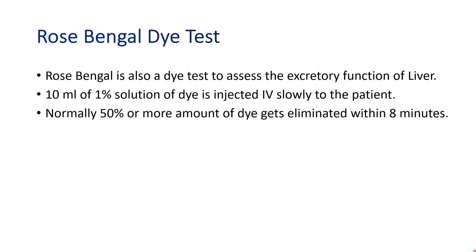The Rose-Bengal dye test can also assess the excretory function of the liver. In this test, 10 ml of a 1 percent solution of Rose-Bengal dye is injected intravenously to the patient very slowly. In normal cases, 50 percent or more of the dye will be eliminated within 8 minutes. This test is also helpful to assess the excretory function of the liver.